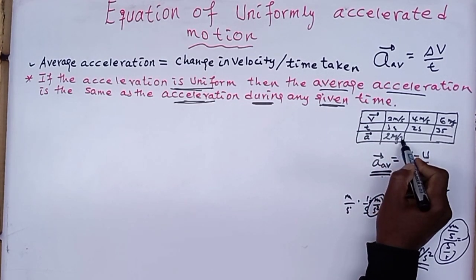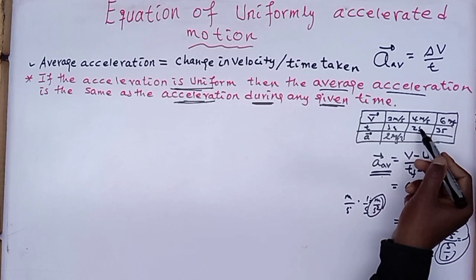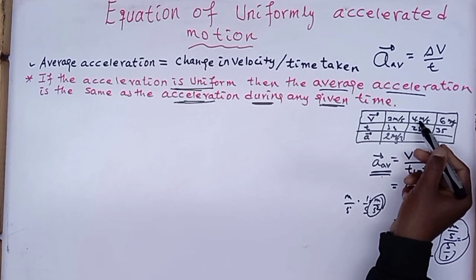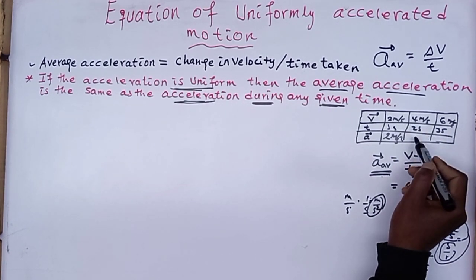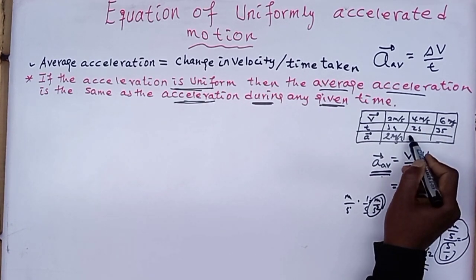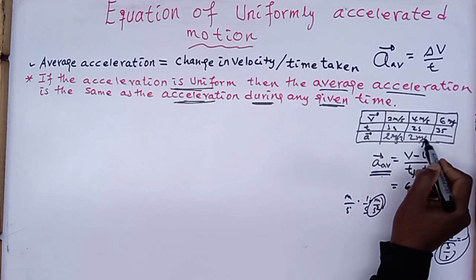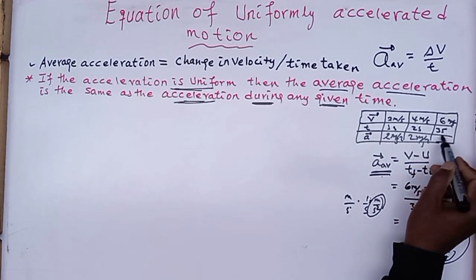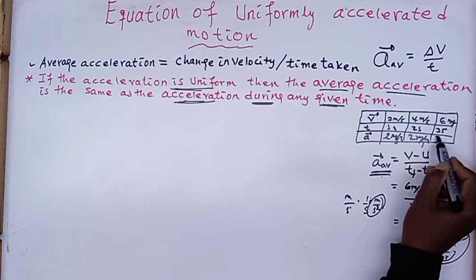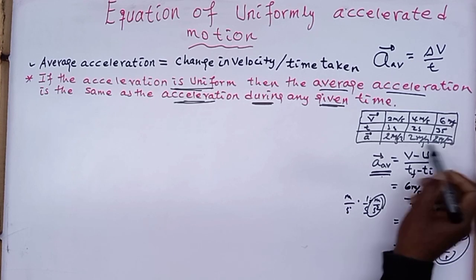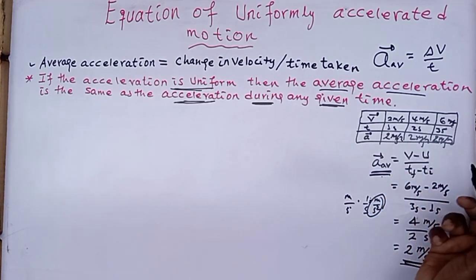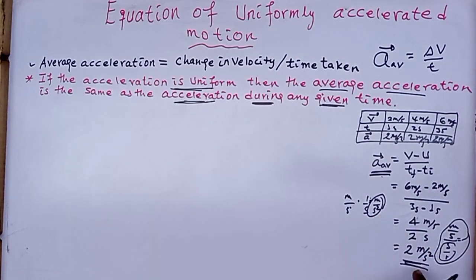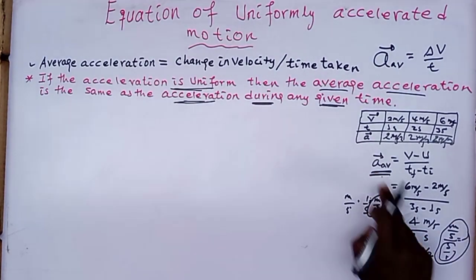At 5 meters per second squared, at two seconds the velocity is 4 meters per second. At 1.5 meters per second squared. We have identified that the average acceleration can be used when acceleration is uniform.